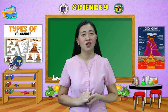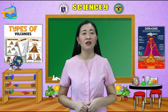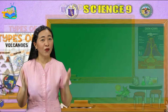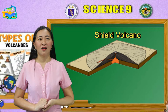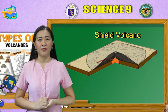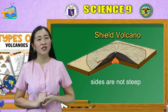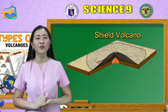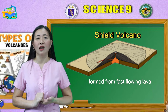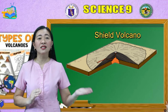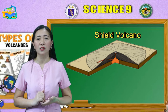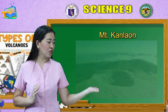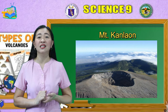Speaking of shapes and sizes, let us have the classification of volcanoes according to the shape of the cone. First, let us have shield volcanoes. Shield volcanoes get their name from their shape — they are literally shaped like a shield. The sides of a shield volcano are not steep, but the volcano may cover a very large area. These volcanoes are formed from fast-flowing lava that flows easily over the surface. The slope of a shield volcano is less than 10 degrees. Mount Kanlaon, which is located in the island of Negros, is an example of a shield volcano.